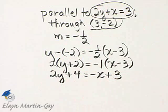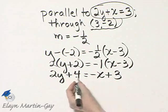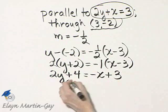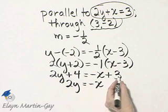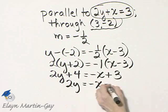Now again, we want to write it not in standard form, but using function notation. That means we need to solve this equation for y. So I'll subtract 4 from both sides, and I'll have 2y is equal to negative x, 3 minus 4, that's negative 1.